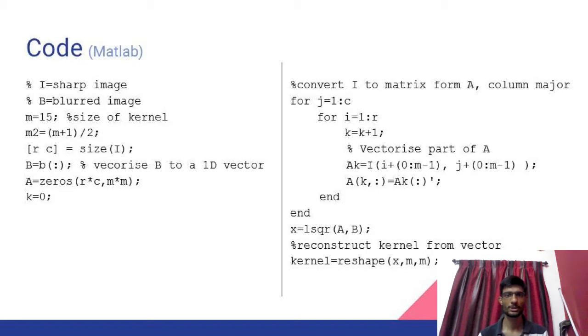First, the blurred image B is taken and vectorized into a 1D format. Then, the original denoised image A is taken in parts having the size same as that of the kernel and centered around a particular pixel. This part of the image is then vectorized. This process continues for every pixel in the image. Once we solve all the linear equations thus obtained, we can now estimate the kernel.